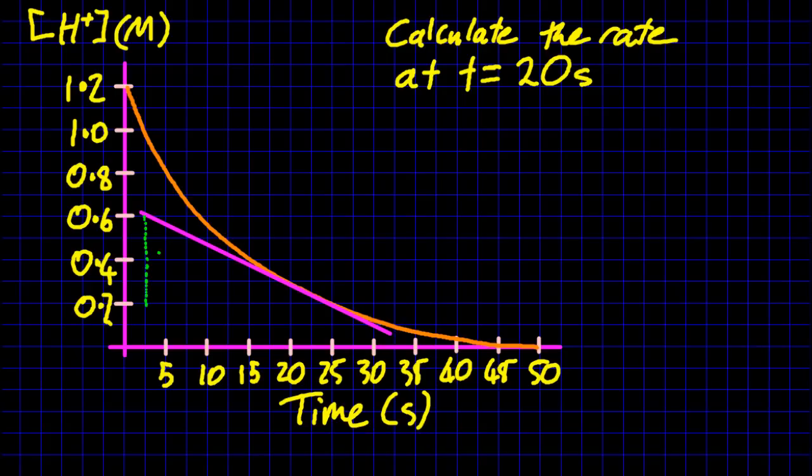So it's rise over run. And the rise, it goes from 0.2 to 0.6. So the rise is 0.4. And the time, well, it goes from 2.5 to 25. Now, the bigger the triangle you draw, the more accurate your answer will be. So 22.5 is the difference. Let me just write it out a bit more formally.